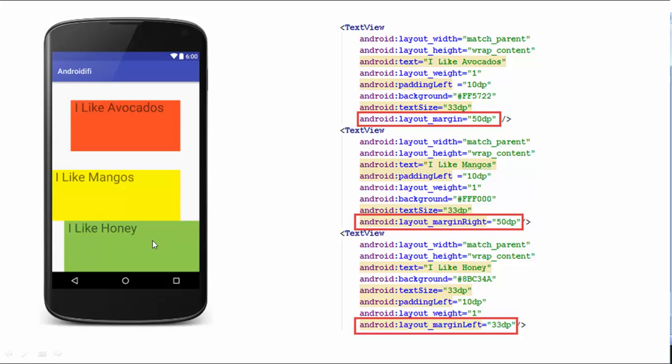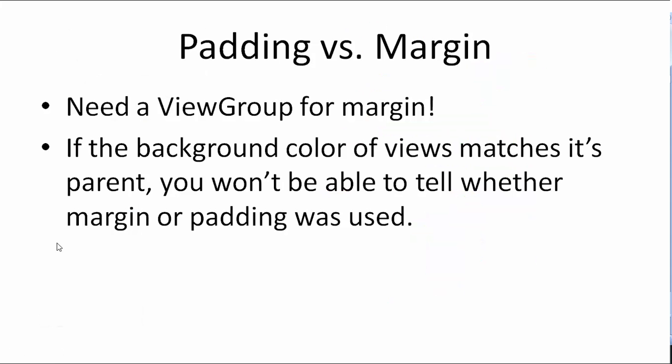The second text view ('I like mangoes') has 50 dips of margin right, creating a buffer zone on the right side. The last text view has 33 dips of margin left, creating a buffer zone on the left side. You need a view group for margin because padding is handled by the view itself, whereas with margin, a view group pushes the view away from it. Also, if the background color of child views is the same as the parent view, the effect achieved by padding and margin will be the same.